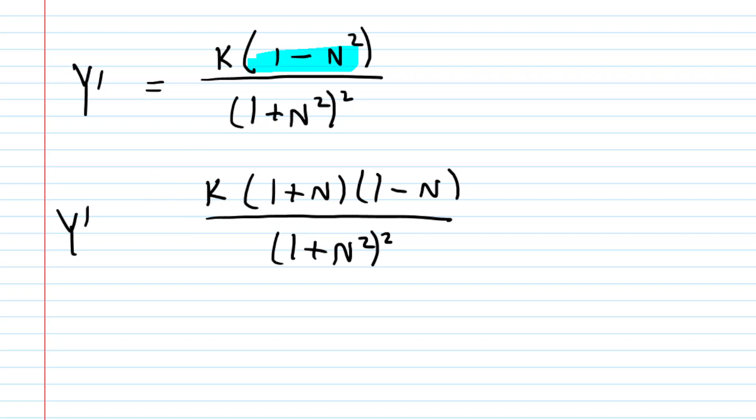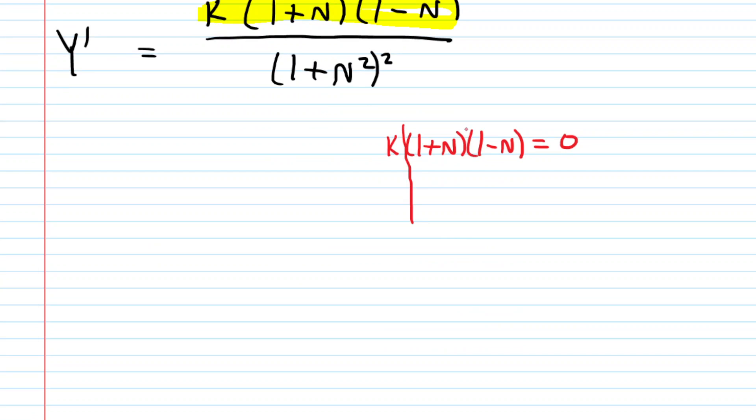Once you have your derivative, you're supposed to find where the derivative is equal to 0 or where it is undefined. Where the derivative equals 0 would be based on where the numerator equals 0. We set the numerator equal to 0 and split this three ways, setting each factor equal to 0. k equals 0 is not true because k is a positive constant. 1 plus N equals 0 gives N equals negative 1. That doesn't make sense because N represents the nitrogen level. You can't have a negative nitrogen level. 1 minus N equals 0 gives N equals 1.